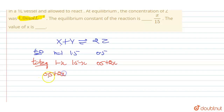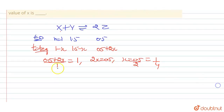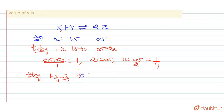Net moles of z at equilibrium is 0.5 plus 2x. Since volume is one liter, concentration of z equals 0.5 plus 2x, and this equals one mole per liter. So 2x equals 0.5, therefore x equals 0.5 divided by 2, which gives x equals 1 by 4.